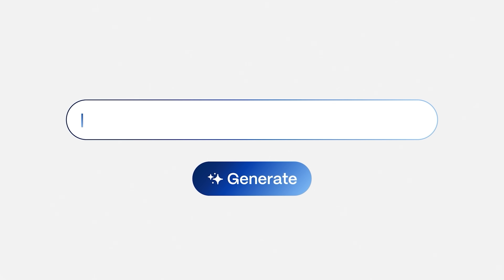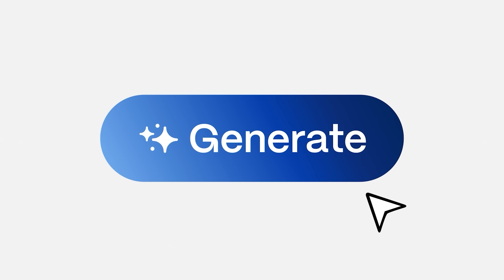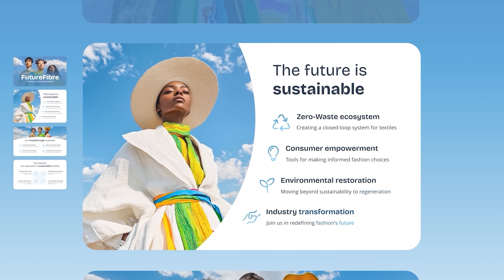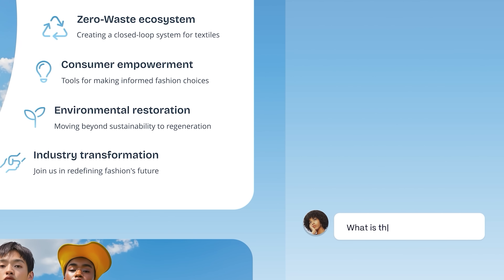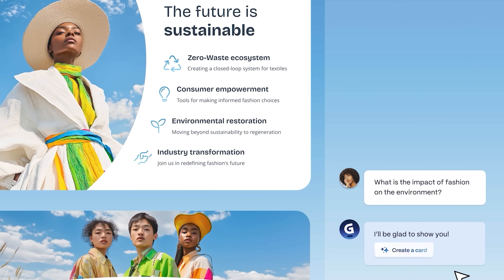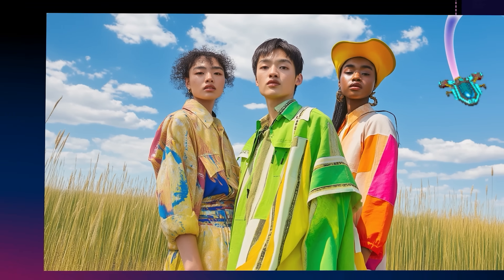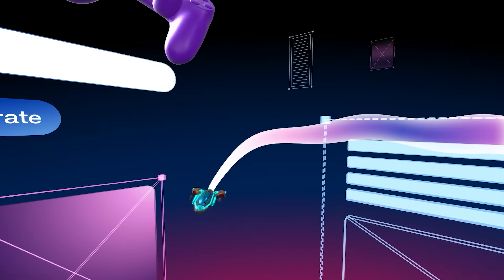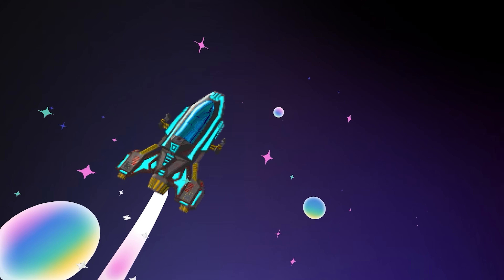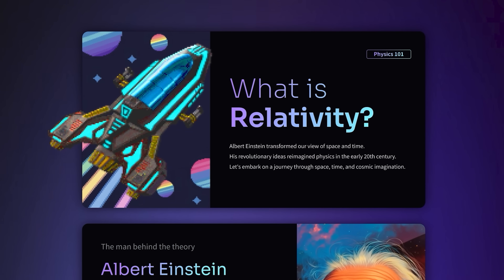Gamma isn't just another slide deck tool — it's more like a creative engine that turns your ideas into fully formed content. You can build presentations, documents, and websites from the same place without switching tabs or copying and pasting across apps. What really sets it apart is how flexible it is. You're not locked into traditional slides; you're building something interactive that adapts to your content.